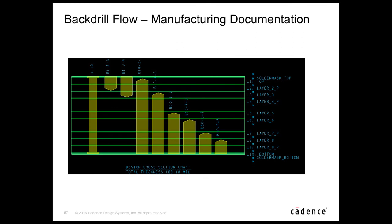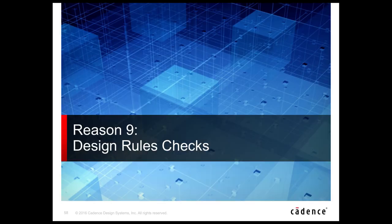For manufacturing export, the IPC 2581 format now supports back drill intent. A graphic added to the cross-section chart shows back drill intent: the first column is the standard through-hole drill, and back drill is represented by tips on the drill figures, with labels showing the start layer, second layer, and must-not-cut layer.